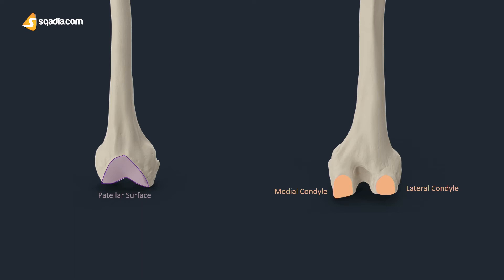The more prominent lateral condyle helps to prevent the natural lateral movement of the patella. A flatter condyle is more likely to result in patellar dislocation. Medial and lateral epicondyles are bony elevations on the non-articular areas of the condyle. The medial epicondyle is larger, as you can see.